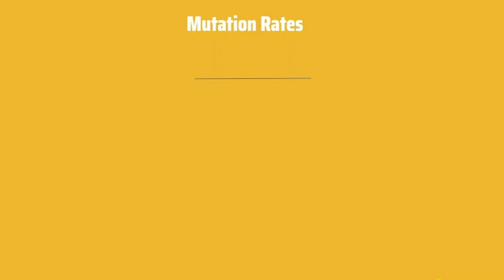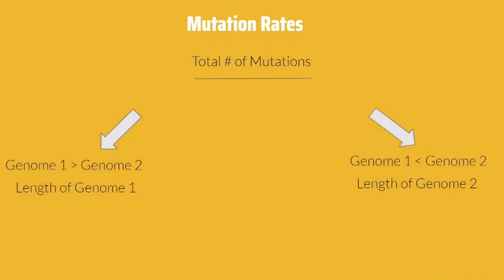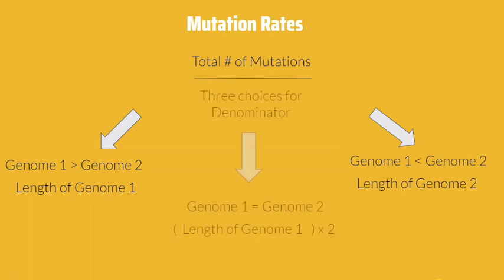Once the program has iterated through the entire sequence for both genomic strands, it calculates the mutation rate by dividing the length of the array, which represents the total number of mutations, with the total length of the largest genomic sequence, or twice the amount of one of the sequences if they are of equal length.